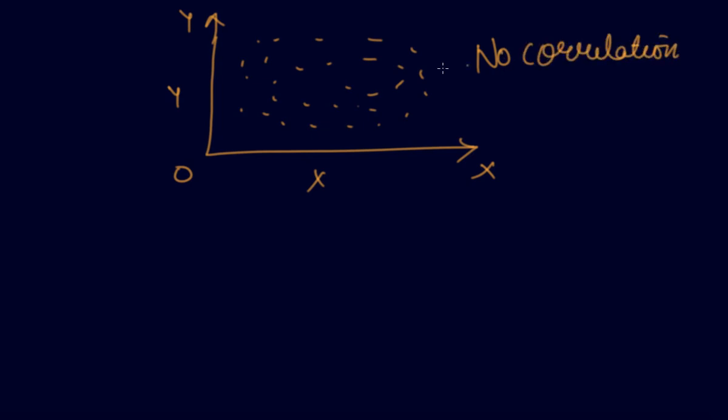Now, if you get after plotting the graph, if you get somewhere like this, in this way you can find out the correlation using the scatter diagram.